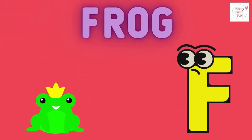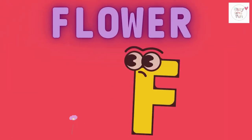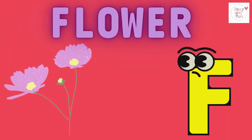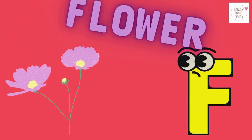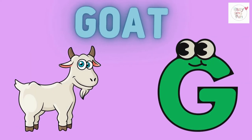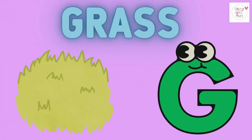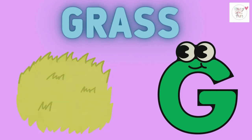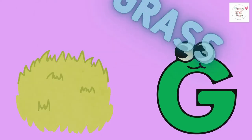F is for flower, f-f-flower. G is for goat, c-c-c-goat. G is for grass, g-g-grass.